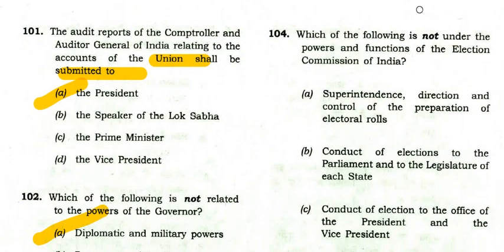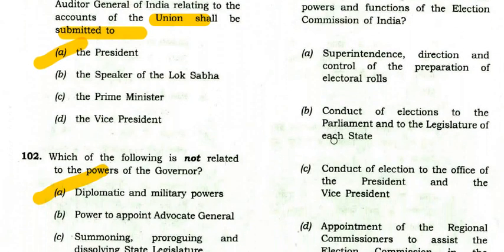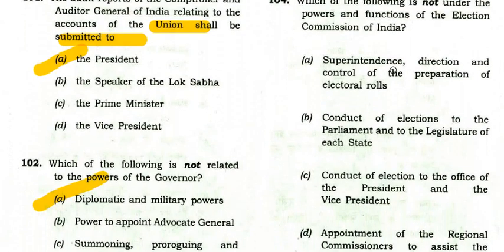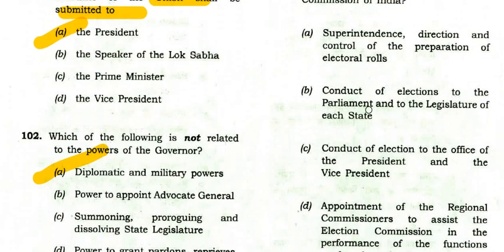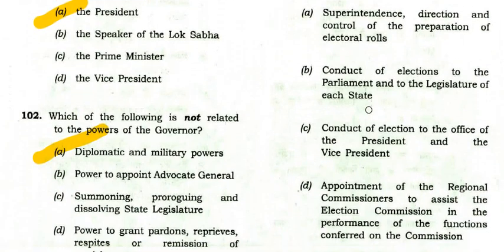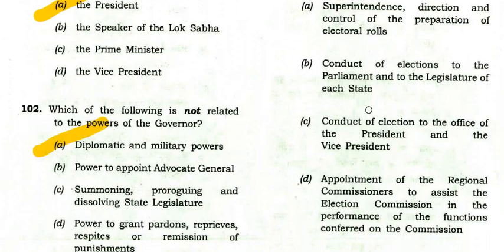Which is not under the powers and functions of the Election Commission of India? Superintendence and direction of electoral rolls — under their control. Conduct of elections to Parliament and state legislatures — also their control. Conduct of elections for President and Vice President — also their control. Appointment of regional commissioners — that is not under their control; regional commissioners are not appointed by them.